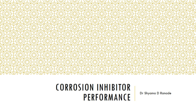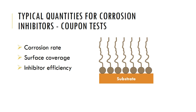Hello everyone, welcome to this new video. In this video I will talk about the different ways in which corrosion inhibitor performance is measured. This is part one. The typical quantities used to quantify the behavior of corrosion inhibitors are measured using coupon tests. The names of these quantities are corrosion rate, surface coverage, and inhibitor efficiency.